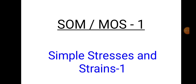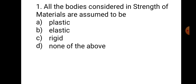Let us start with the first chapter of Simple Stresses and Strains. Question number 1: All the bodies considered in strength of material are assumed to be — A. Plastic, B. Elastic, C. Rigid, D. None of the above. The basic assumption for strength of material is that every body is elastic. In applied mechanics, every body was assumed as a rigid body, but in strength of material, we assume it to be elastic. Hence, the correct answer is B. Elastic.